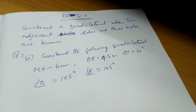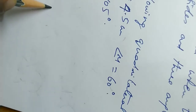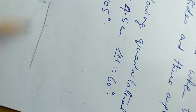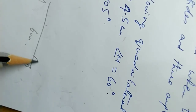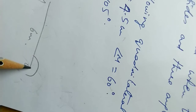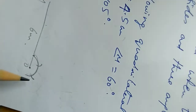Now we will see a rough figure. MO is equal to 6cm. We will see 105 degrees. In this center, one arc is equal to 60 degrees and the other radius is equal to 120 degrees.